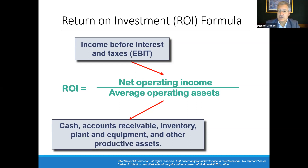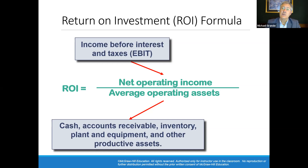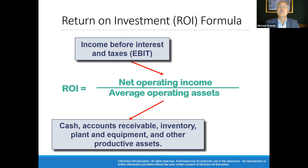Operating assets include cash, accounts receivable, inventory, property, plant and equipment, and other productive assets. They do not include short-term investments, long-term investments, loans to other companies, or land held for investment or speculative purposes. However, they do include land on which a building or facility sits, because it's operational — but land bought simply for speculative profit is not an operating asset.